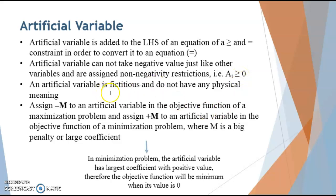These artificial variables are fictitious and they do not have any physical meaning. They are just added in order to simplify the process of the simplex table. In case of maximization problems, negative capital M is added to an artificial variable in the objective function, and in case of minimization problems, positive M is added as a coefficient to the artificial variable. This capital M is a big penalty or a very large coefficient.